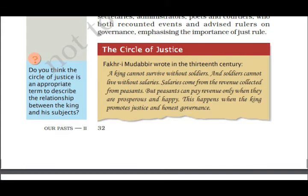There is a box here about the 'Circle of Justice.' It is an appropriate term to describe the relationship between the king and his subjects. A king cannot survive without soldiers, and soldiers work on salary. Salaries were paid from revenue collected from peasants. But peasants can only pay taxes when they are happy and prosperous. This happens when the king promotes justice and honest governance — and that is our Circle of Justice.